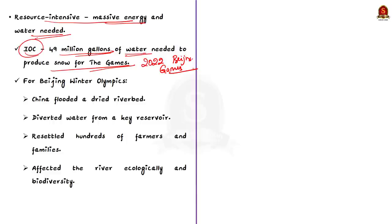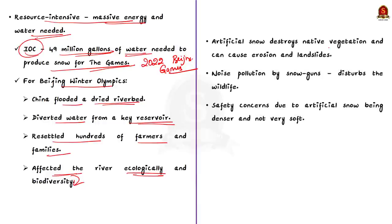Now, for this amount of water in the Beijing Olympics, the Chinese government flooded a dry river bed by diverting water from a key reservoir. They also resettled hundreds of farmers and their families for this diversion. So, for the game, they have ecologically changed the river, affecting the biodiversity, and also affecting people's livelihood. Now, just for making artificial snow, this much damage is being done.